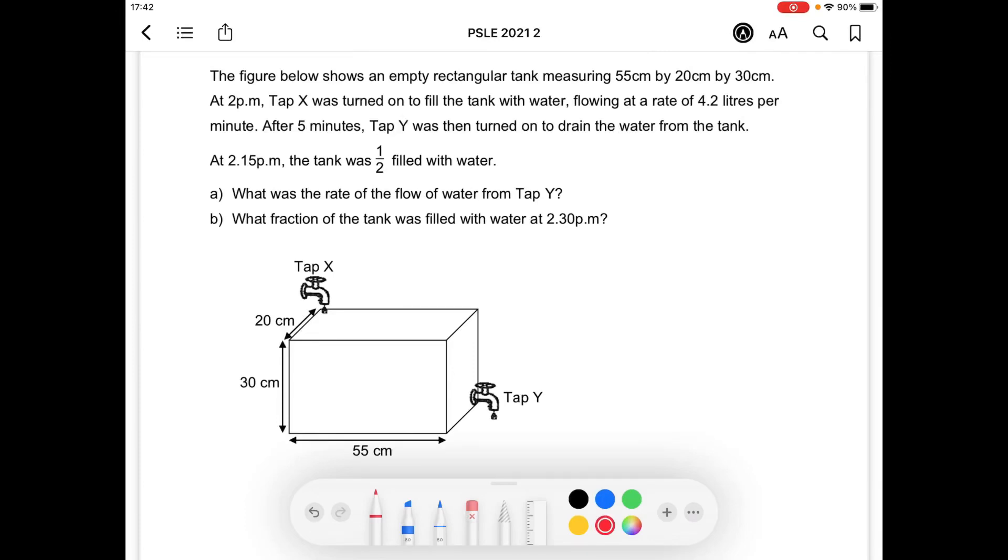The figure below shows an empty rectangular tank measuring 55 by 20 by 30 centimeters. At 2 p.m., Tap X was turned on to fill the tank with water flowing at a rate of 4.2 liters per minute.